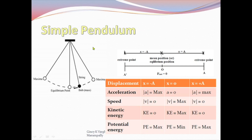We can discuss this example — the simple pendulum. The dotted lines show the to and fro motion of the bob. This is the equilibrium position. This is the positive maximum and this is the negative maximum. So displacement at the extreme point is taken as A. At the negative extreme it is minus A, at the positive extreme it is plus A, and at equilibrium it is 0.